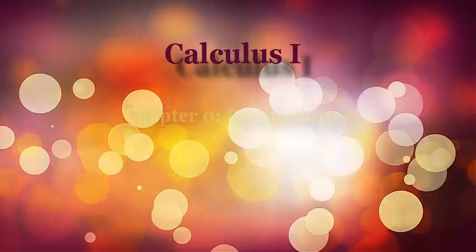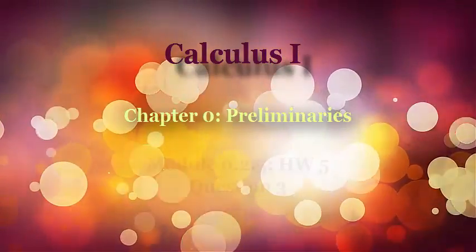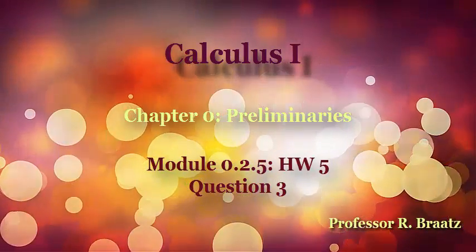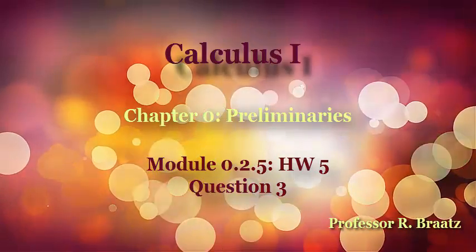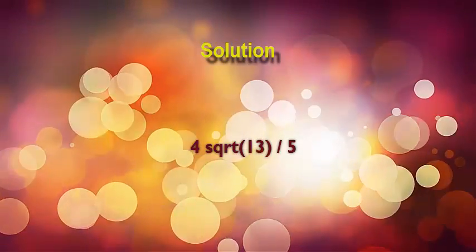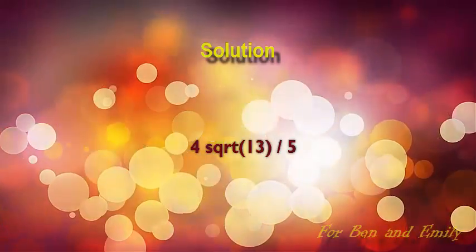This is Calculus 1. We're looking at problem number 3 from homework set number 5. The solution to this problem is 4 times the square root of 13 divided by 5. So let's go ahead and see how we get that value.